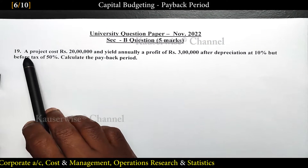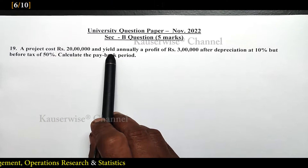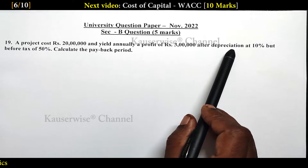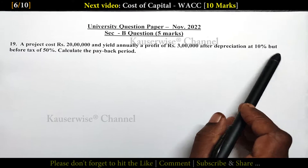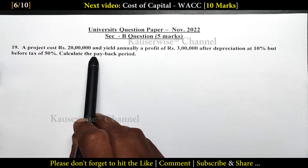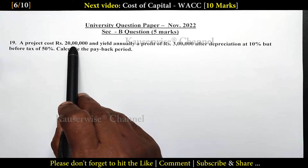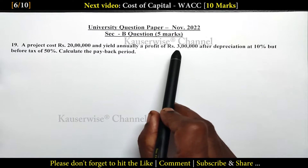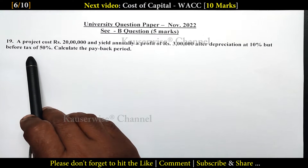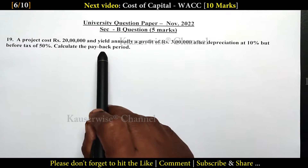See the problem. A project costs 20 lakhs and yields annual profit of rupees 3 lakhs after depreciation at 10 percentage but before tax at 50 percentage. Calculate payback period. Here they have given the project cost of 20 lakhs and annual profit of 3 lakhs after depreciation but before tax. With this information, they are asking us to calculate payback period.